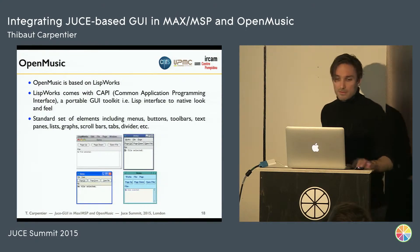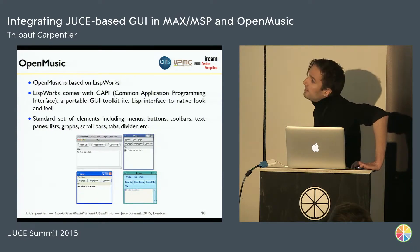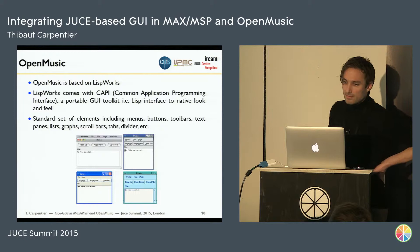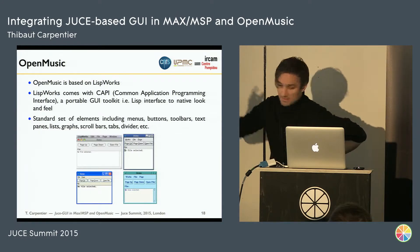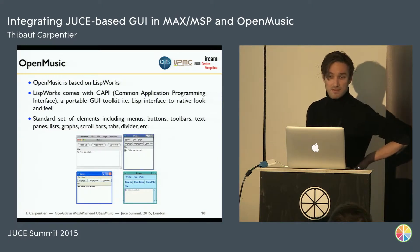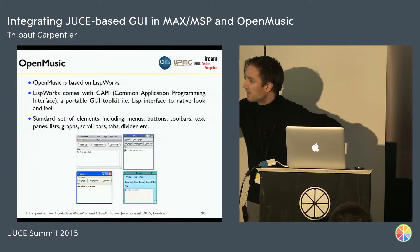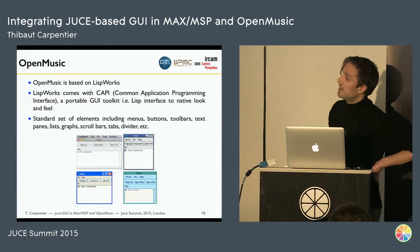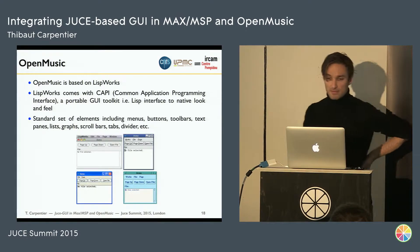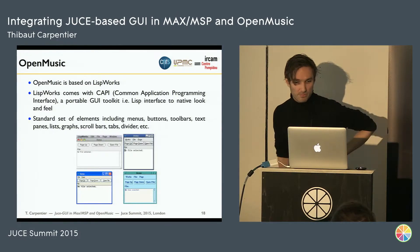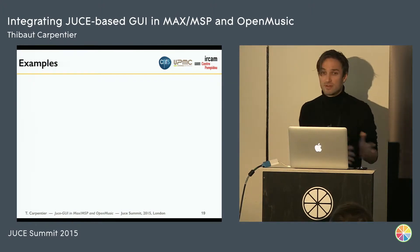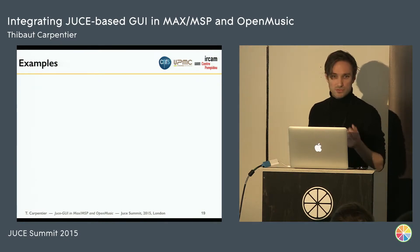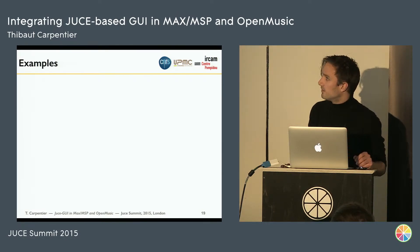Open Music is also somehow similar — you can develop your own boxes, but the software is entirely written in Lisp, so it relies on LispWorks. It's possible to develop graphic objects using an API called the CAPI, which provides a number of widgets in a cross-platform way with bindings to native toolkits. But I'm not going to rewrite my software for all these different APIs — I wanted to use JUCE and just put my JUCE object in all these different contexts.